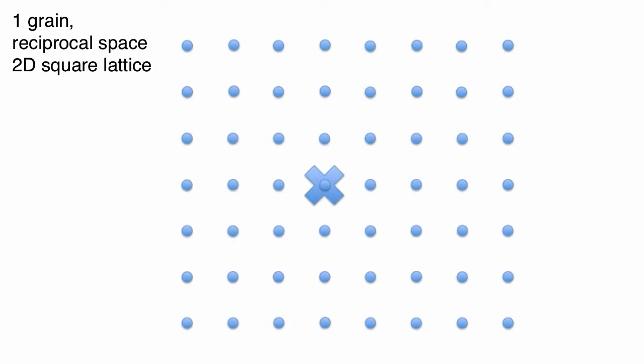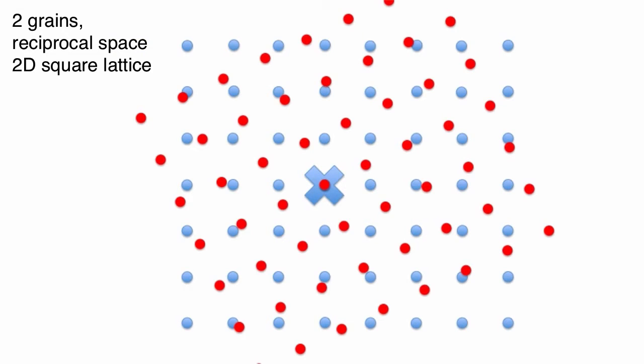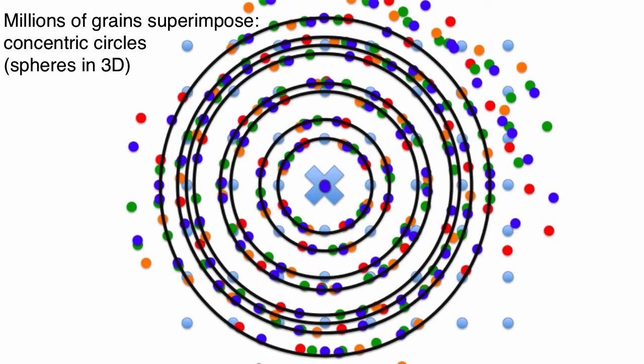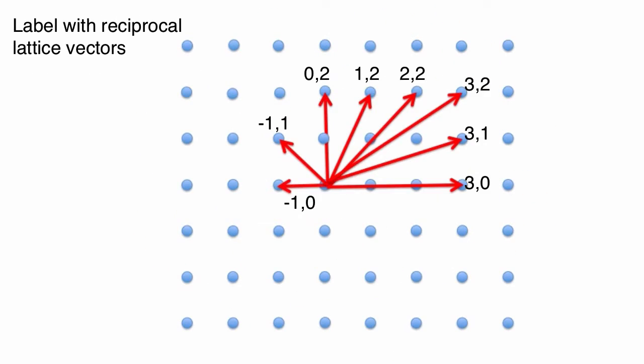But instead of just two grains, powders are made up of many grains. Exactly, and all these randomly oriented grains interact together with the beam. This superposition yields an effective reciprocal space that is made up of these concentric spheres that we can label using reciprocal lattice vectors.